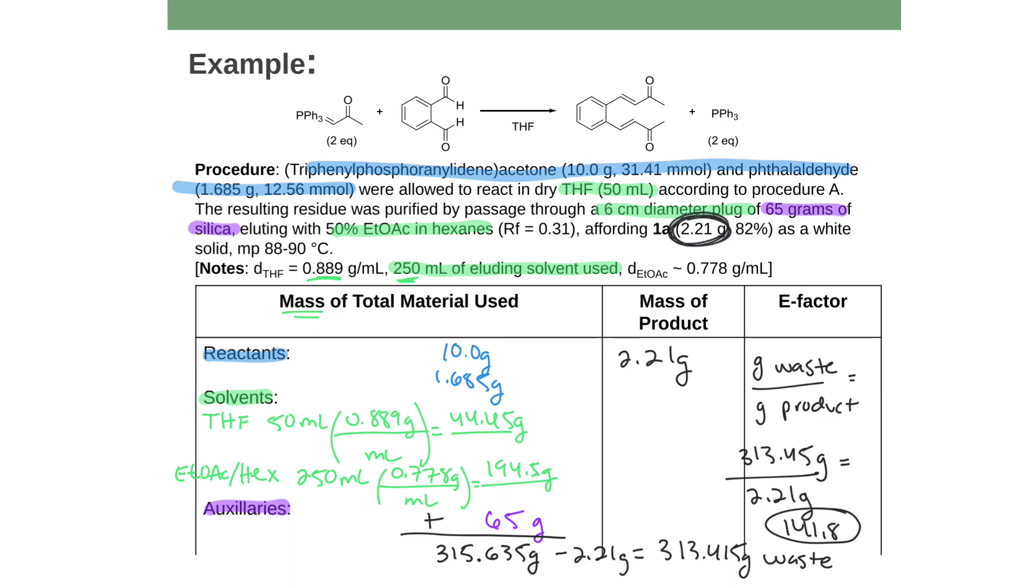That was not a very efficient thing. And we'll see, for example, in the future that doing things like running a silica column is very wasteful. It's not the greenest way to isolate a compound. Recrystallization, for example, would be much, much better. But anyways, this is an example of how to calculate the E factor. Add up the mass of everything you used, subtract out the mass of your product, and then you just divide that grams of waste by your grams of product. And that's it.